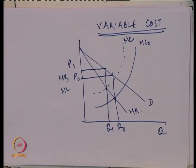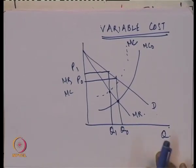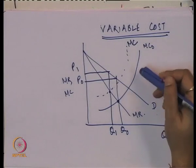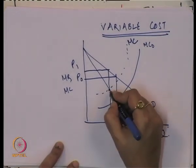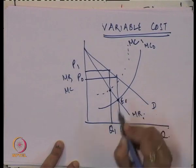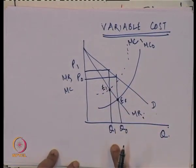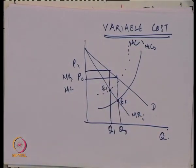To summarize the impact of variable cost: if there is an increase in variable cost, that leads to a shift in the marginal cost curve in the upward direction. The firm gets a new equilibrium corresponding to the new MC curve and the initial MR curve — from E0 to E1. The new output level is less than the previous, and the new price is more than the previous. So whenever there is an increase in variable cost, it reduces the equilibrium output and increases the equilibrium price of the monopolist.